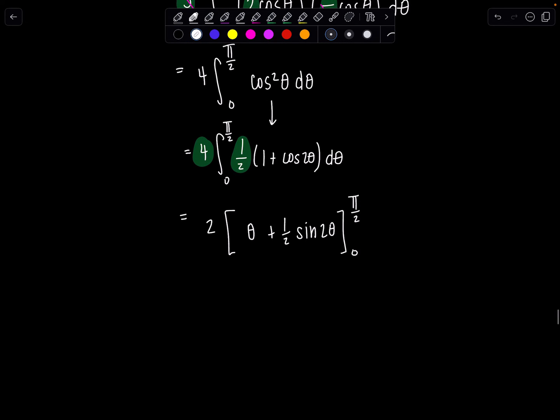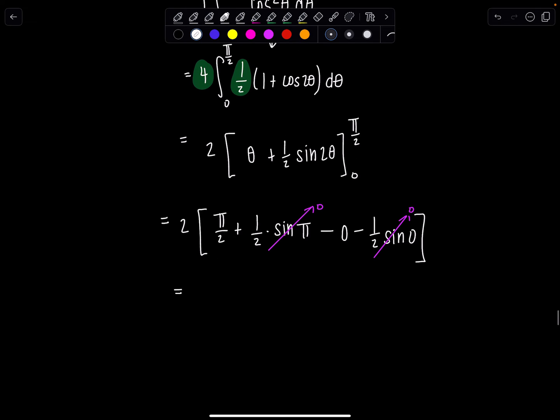Beautiful. So then now we have 2 times. This is π/2 plus 1/2 times sine of 2 times π/2. So sine of π minus 0 minus 1/2 sine of 0. So let's see. Sine of π, that's 0. The rest are all 0. And then lo and behold, all I'm left with is 2 times π/2, which is π. So happy Pi Day.